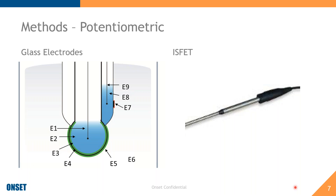A drawback with glass electrodes is that extended deployments will lead to measurement drift. This drift can be corrected by regular calibration with pH buffers. Some potentiometric pH systems use ion-selective field effect transistors, or ISFET, which provide great accuracy and precision for in-situ measurements. However, these require long conditioning periods ranging from a couple of days to six weeks before measurements become accurate. They are great for long-term deployments, such as monitoring ocean acidification over a long period, but are typically much higher in cost.